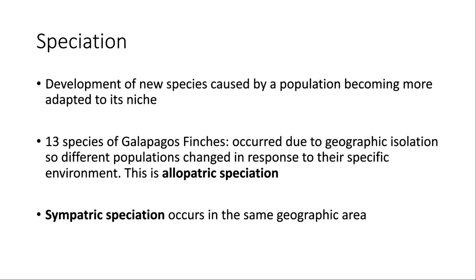When speciation occurs in the same location, that would be sympatric speciation. If species develop simultaneously in the same location — for example, a couple of Galapagos islands apparently had two different types of finches on the same island because they wound up adapting to different niches — that would be sympatric speciation because they were in the same location.